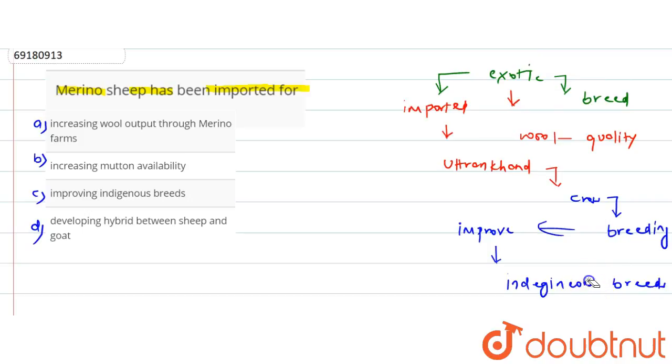If we look at options here, in the fourth option, I have been asked that Merino sheep has been imported for increasing the wool output through Merino farms. So, this is incorrect. Next, I have been asked for increasing mutton availability. This is also incorrect. The third option is for improving the indigenous breeds, for improving the native breeds.